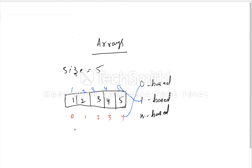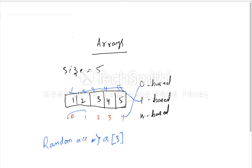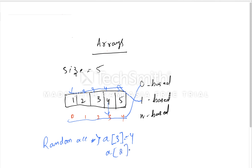Next, let's look at advantages. The basic and most important advantage of arrays is random access. Suppose a[3] — since computers follow zero-based indexing, at index 3 location we have the value four, so it directly gives us four. And if a[2], at index 2 location we have three. This is nothing but random access of elements in an array.